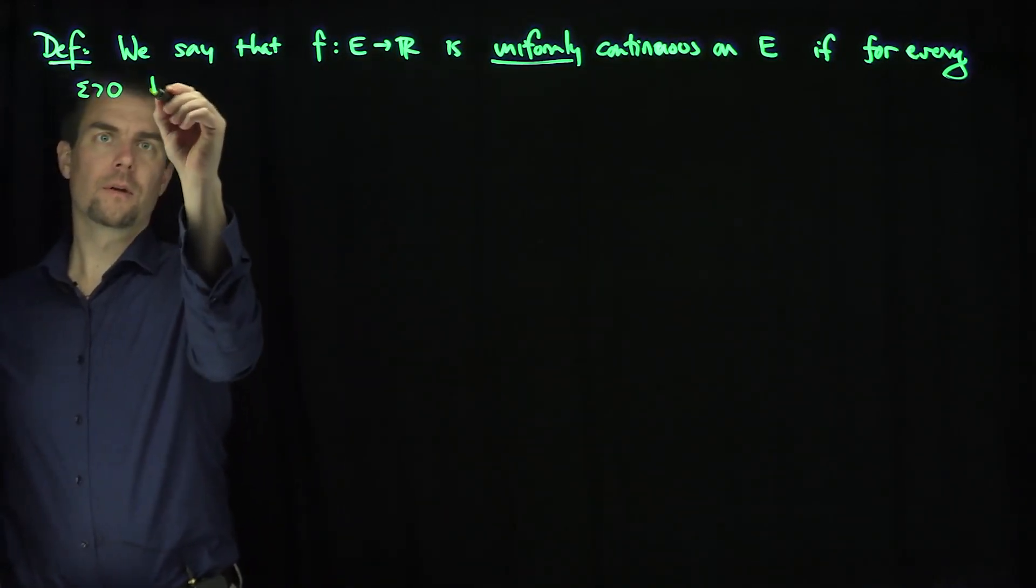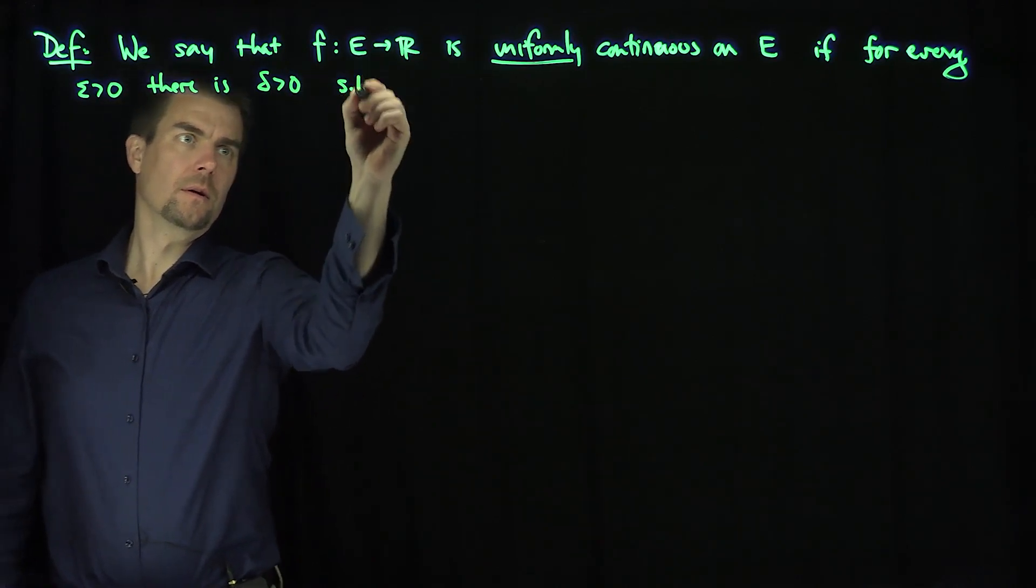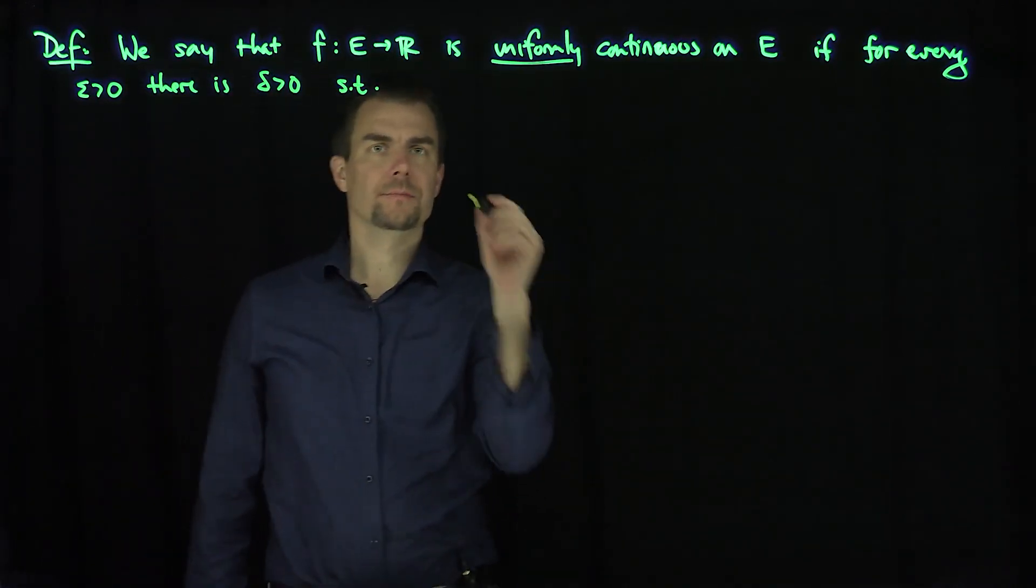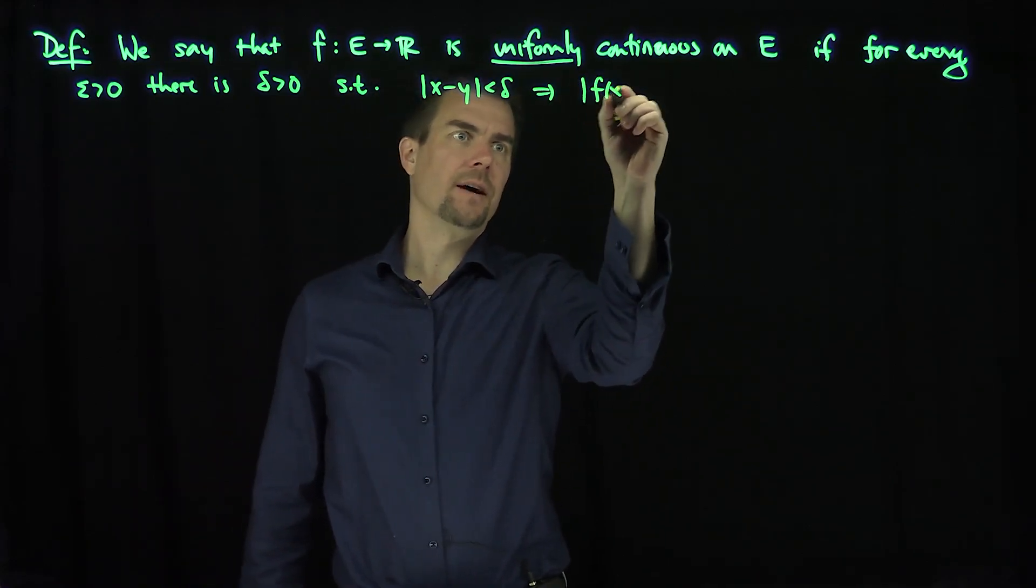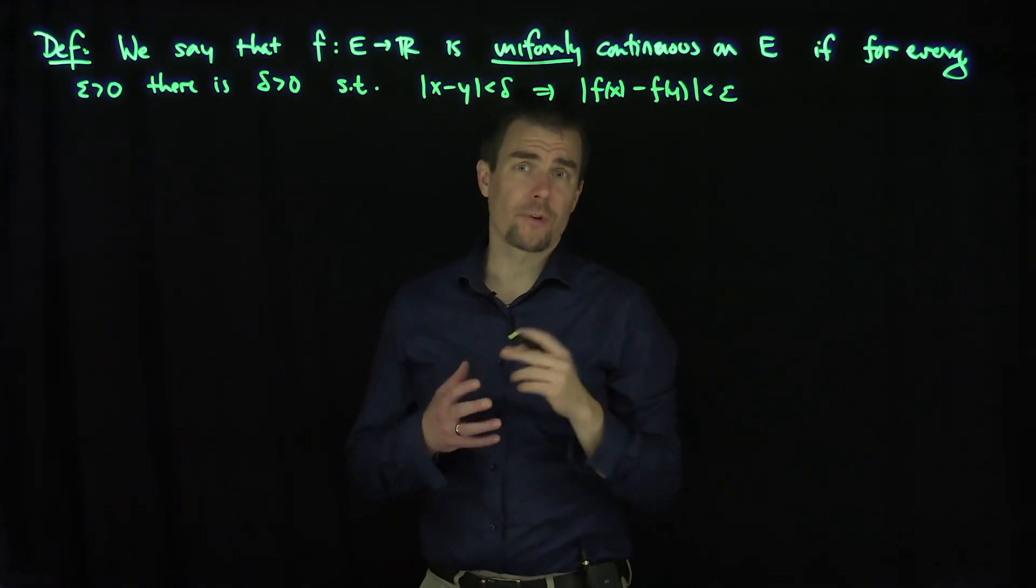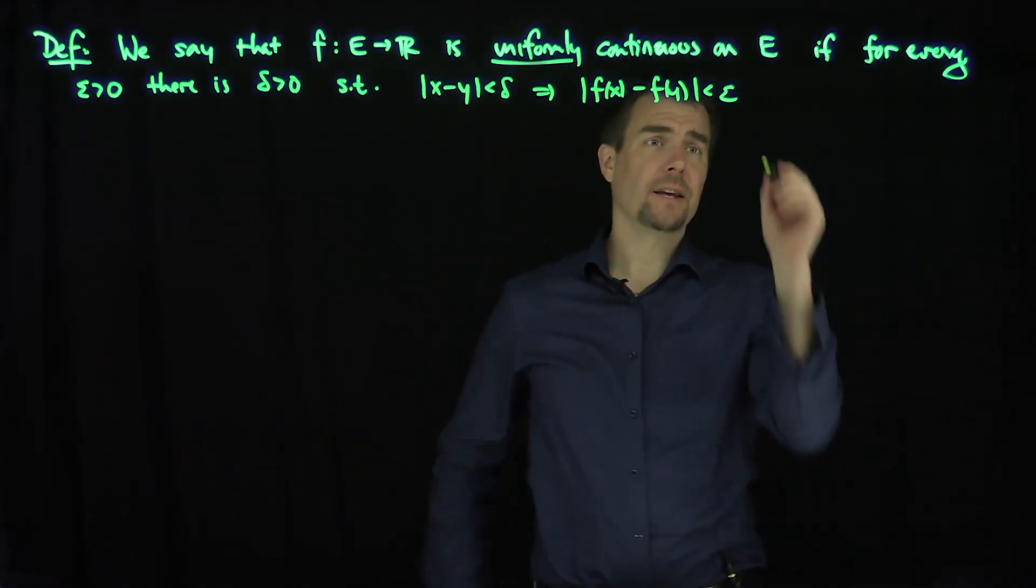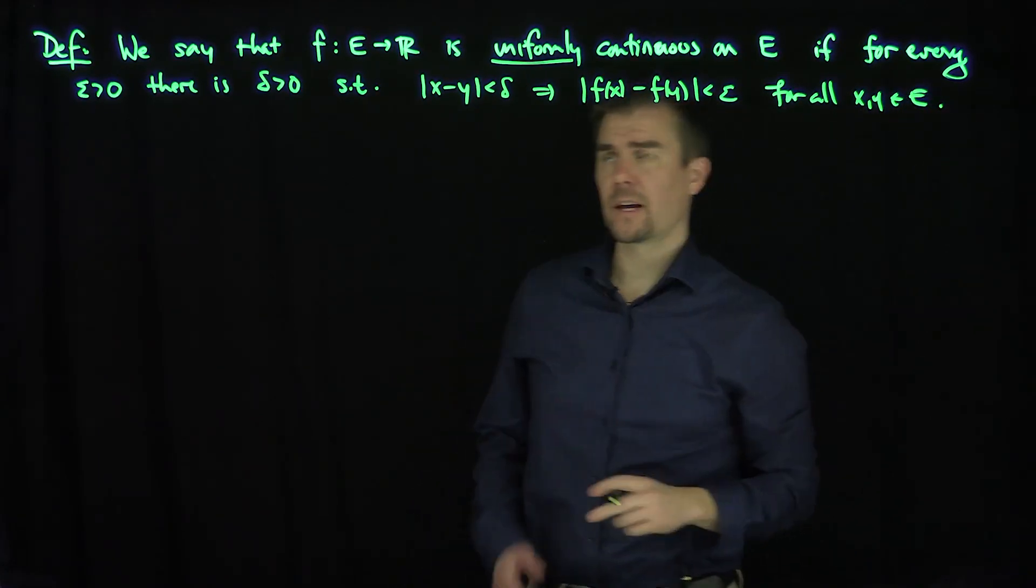there is delta such that x minus y less than delta implies f of x minus f of y less than epsilon for all x and y in the set E.